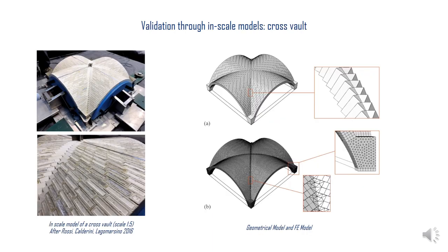The second case study is a 1:5 scale model of a cross-vault built at the University of Genova. The cross-vault has a square base and a net span of about 0.62 m, and is made of typical brick blocks 6×12×24 cm at scale 1:5, which are made of plastic and assembled with dry joints. Inside each block, a steel plate was inserted to increase the vault's weight. The geometrical model was generated with Rhinoceros, with the same block dimensions as the plastic model, except for blocks along the diagonal arches which were modified to simplify the definition of interfaces.